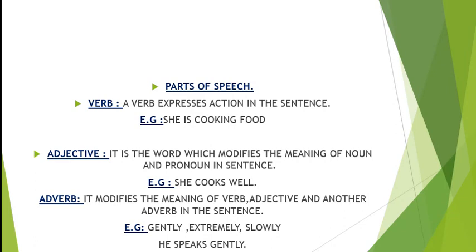Now adjective — it is a word which modifies the meaning of a noun and pronoun in a sentence. For example, 'She cooks well.' She is a noun, cook is a verb, and well is a word which is modifying the quality of the noun. For example, 'She runs fast.' Fast is modifying the quality of 'she,' and she is a noun.